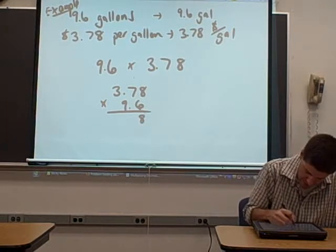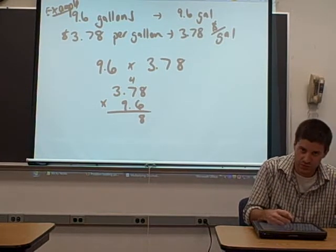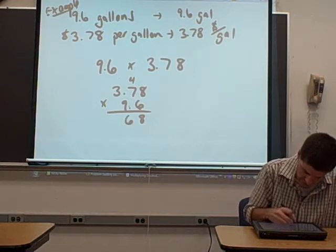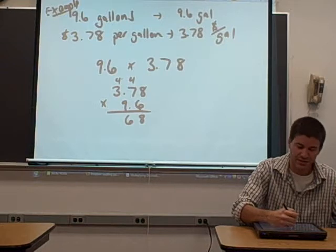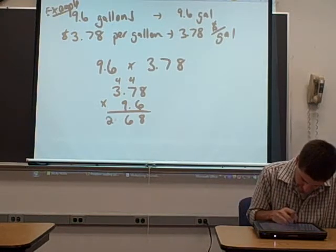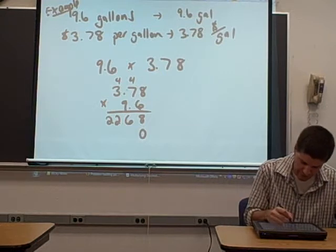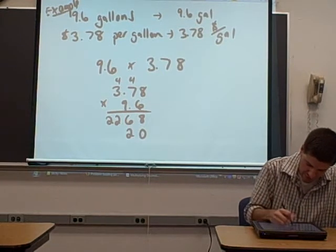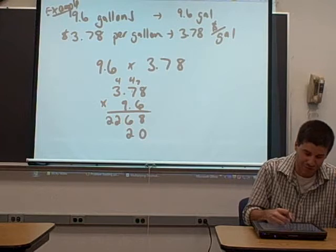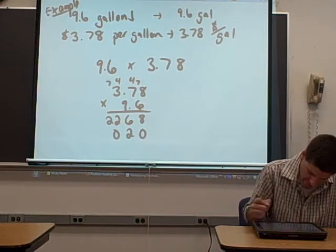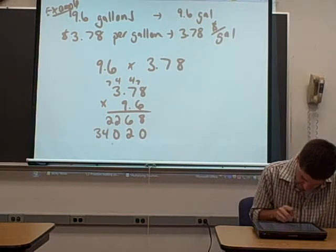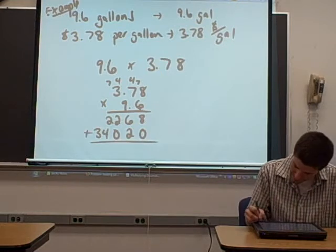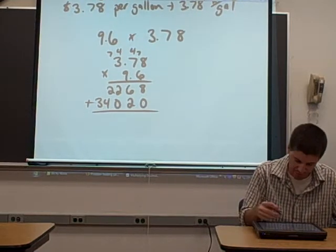So let's see, 6 times 8 is 48. 7 times 6 is 42, plus 4 is 46. Hoping I don't mess this up. 3 times 6 is 18, plus 4 is 22. Okay, now we need to go to the 9. We have a space holder. 9 times 8 is 72. 9 times 7 is 63, plus 7 is 70. Carry the 7. 3 times 9 is 27, plus 7 is 34.